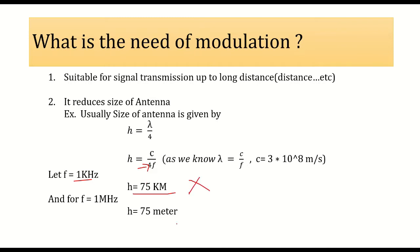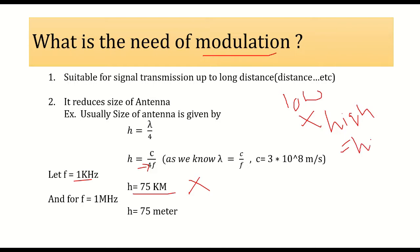So in the modulation process, we take the low frequency message signal and multiply it with a high frequency carrier signal. The combination of these two produces a high frequency signal. For example, if we use 1 megahertz and put it into the equation, we get an antenna height of 75 meters, which is practically possible. So that is why we use modulation — to generate a high frequency strong signal for transmission.